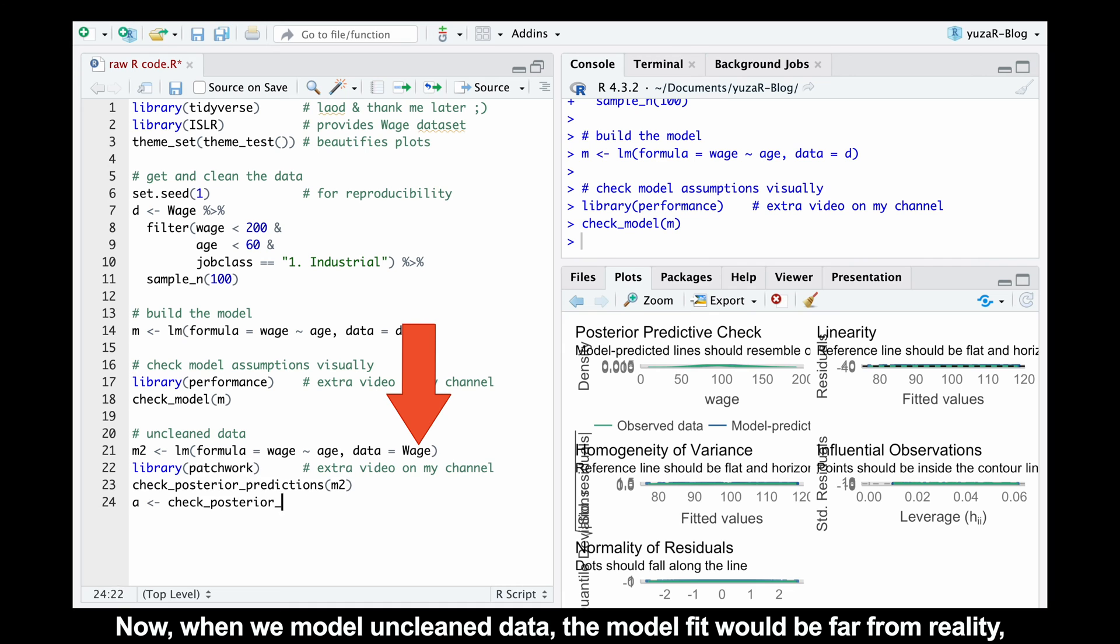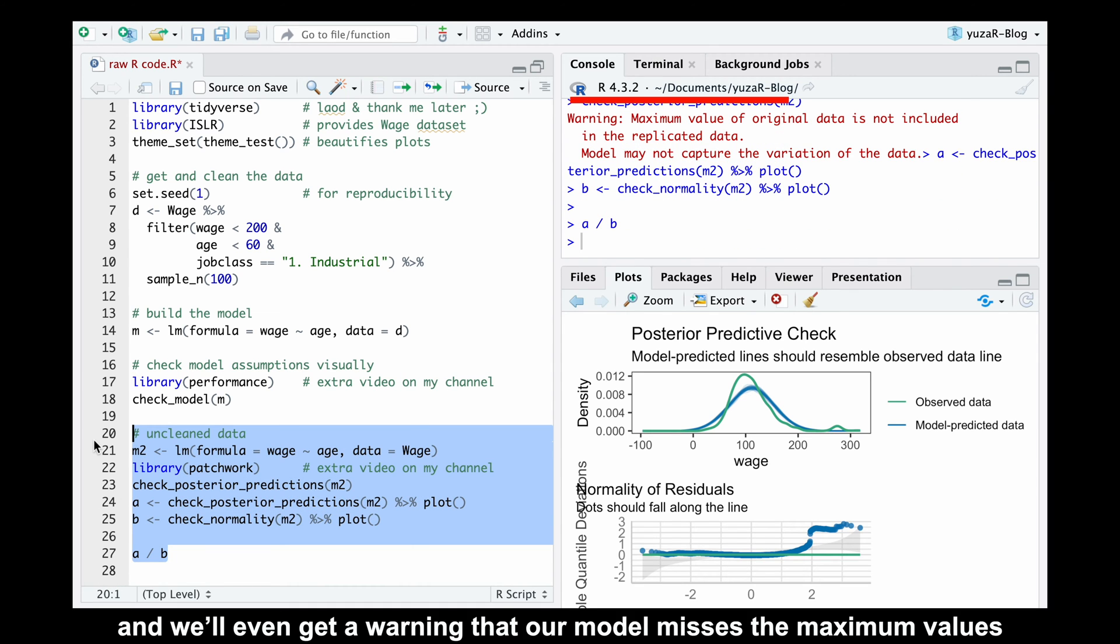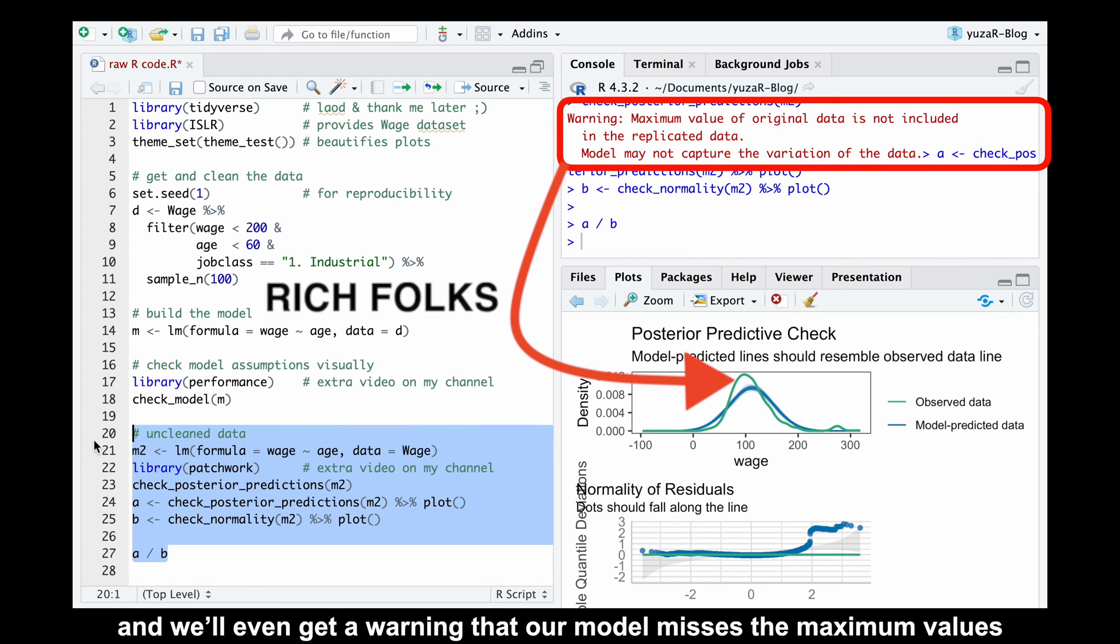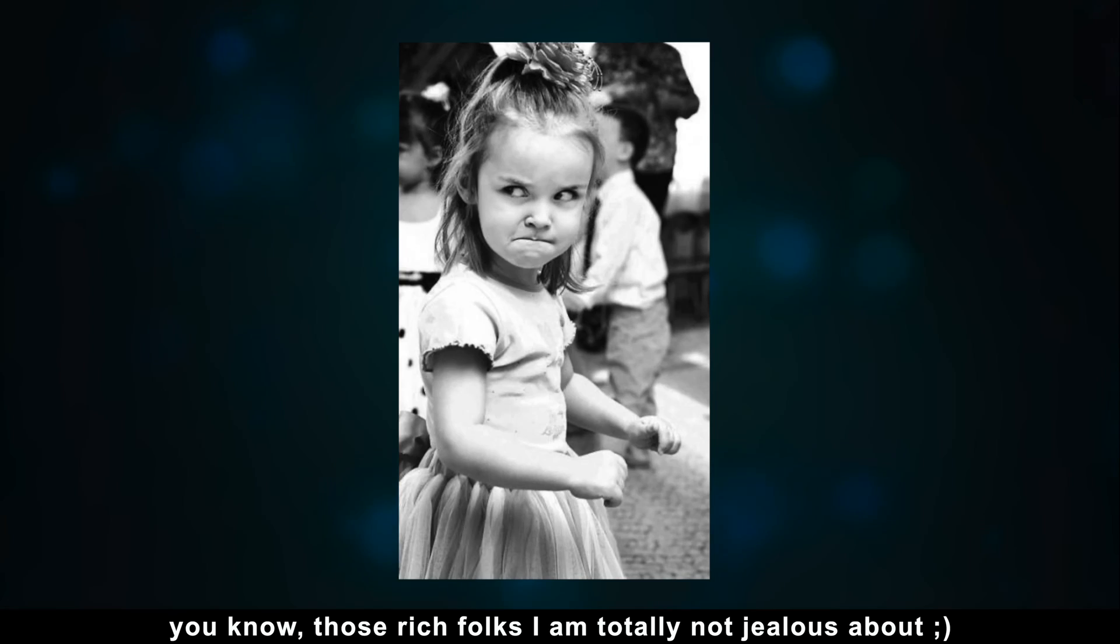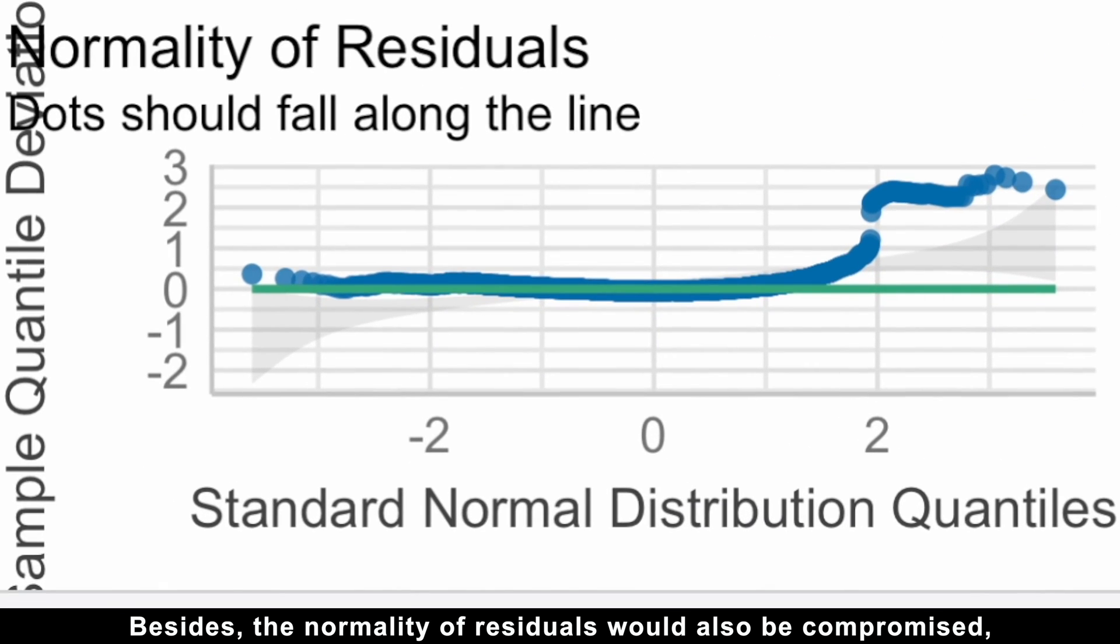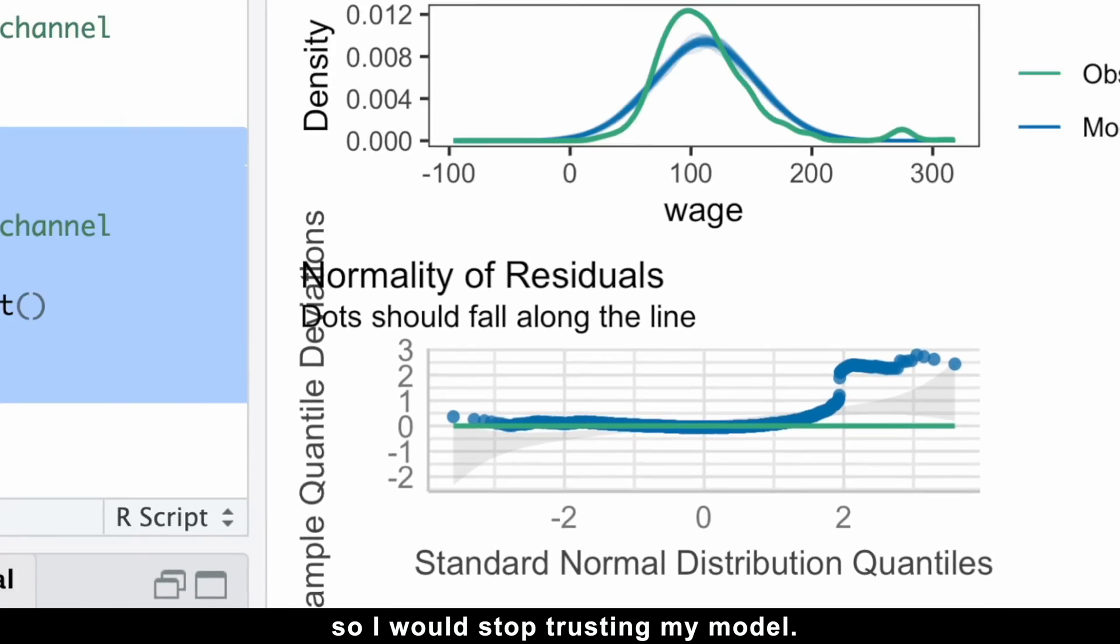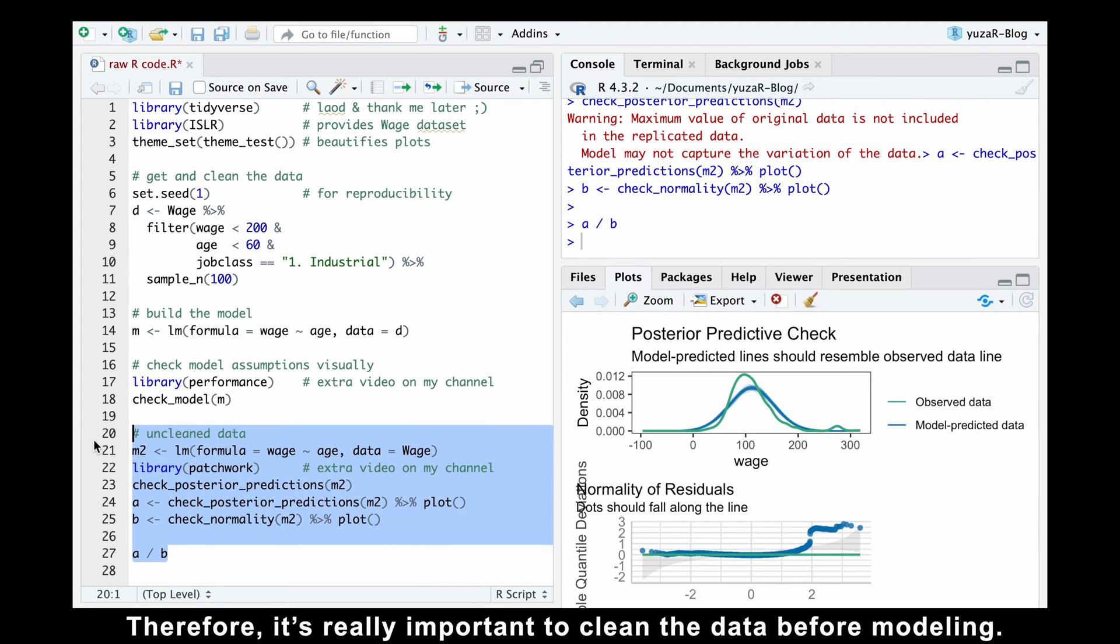Now, when we model unclean data, the model fit would be far from reality, and we'll even get a warning that our model misses the maximum values. You know, those rich folks I'm totally not jealous about. Besides, the normality of residuals would be also compromised, so I would stop trusting my model. Therefore, it's really important to clean the data before modeling.